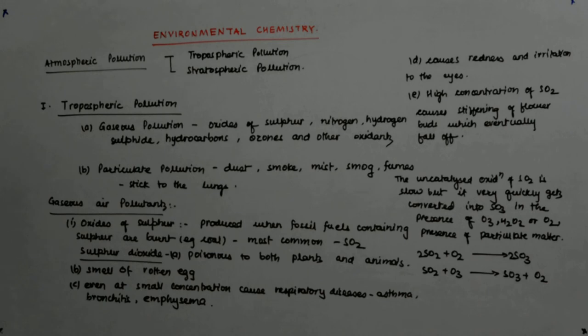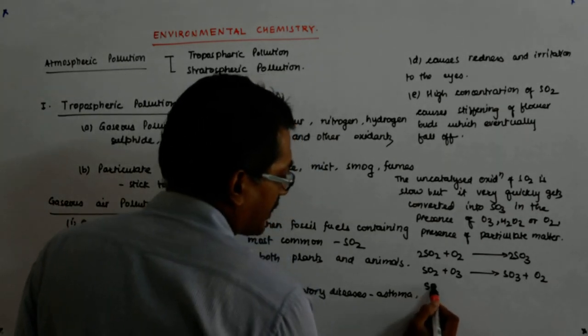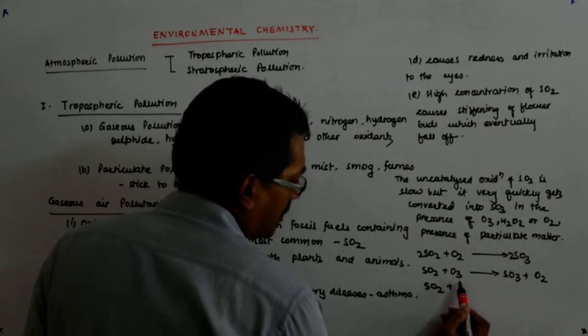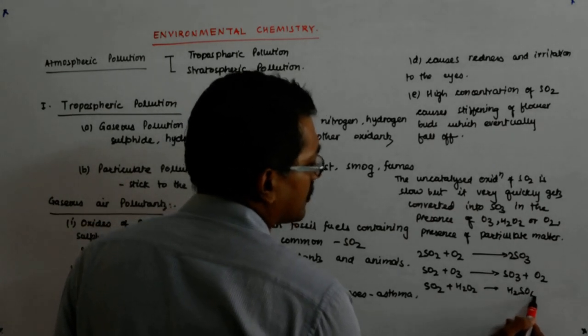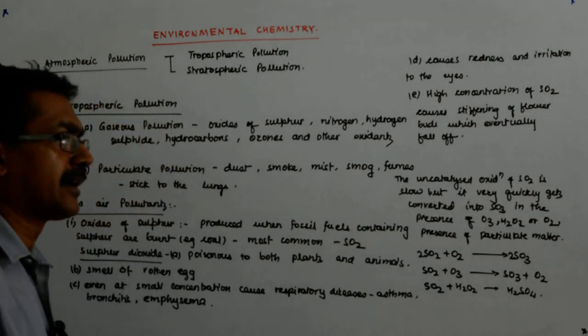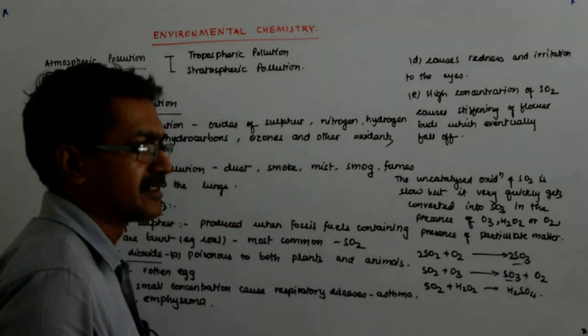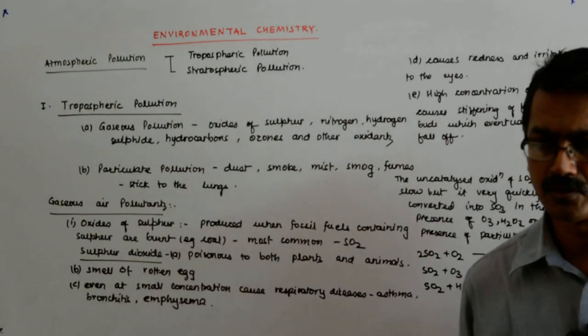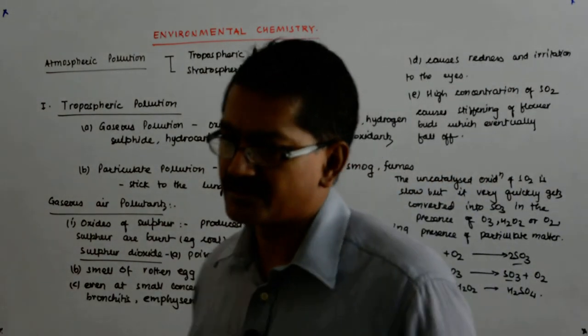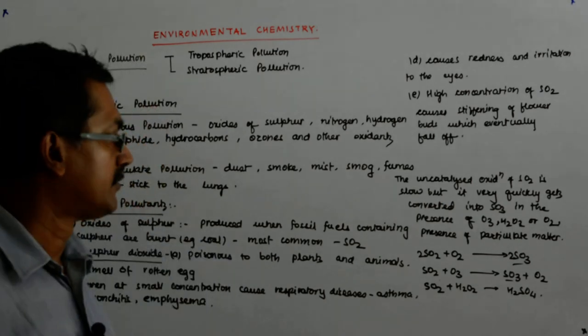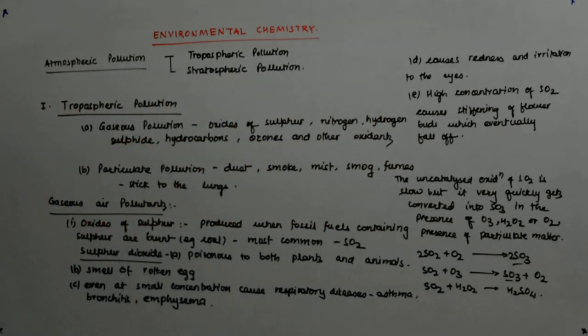SO3 is dangerous in another way. When there is rain, it straightaway converts into H2SO4 and causes acid rain, so it's dangerous in that other form. This is how it gets converted.